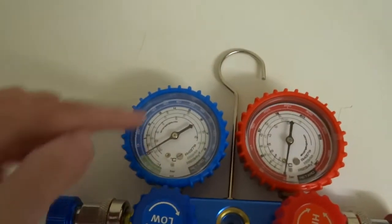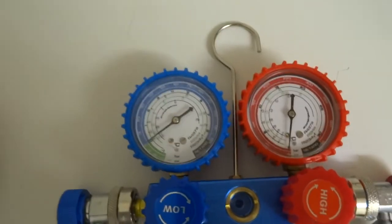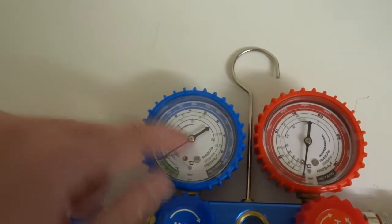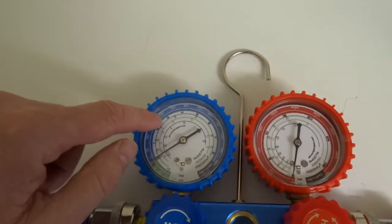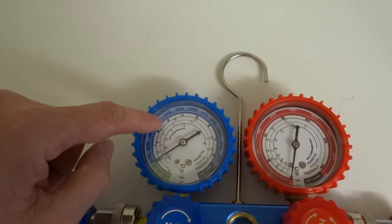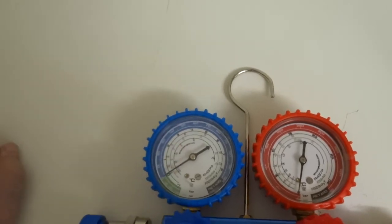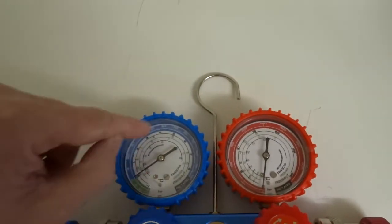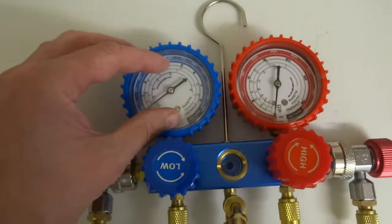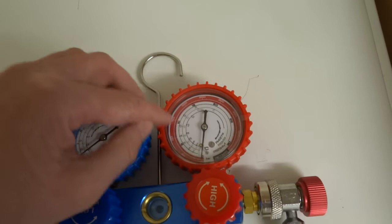Basically you can use that for more advanced fault finding. So say if you're at 35 psi on the low side, using 134A, that's about 4 degrees celsius. So you should check your evaporator and it should be about 4 degrees celsius.